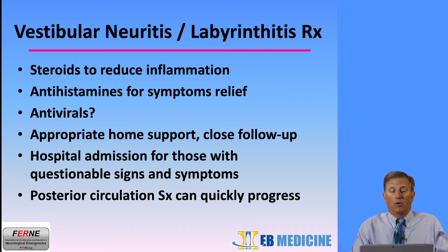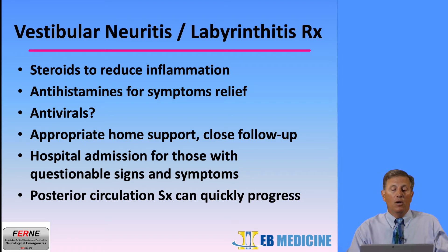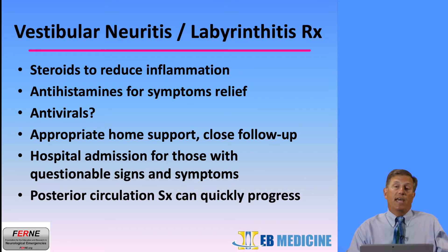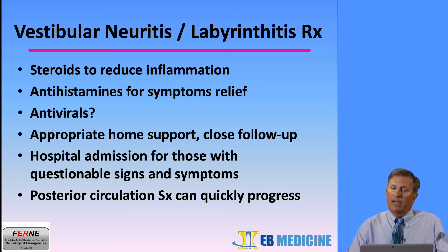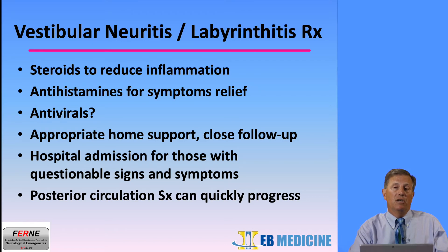What's the treatment of vestibular neuritis and or labyrinthitis? Steroids to reduce inflammation. Antihistamines such as meclizine for symptomatic relief. You might consider antivirals since it's most often a viral etiology. You need appropriate home support and close follow-up. Hospital admission is needed for those with questionable signs and symptoms to exclude posterior ischemic circulation problems. Posterior circulation symptoms can progress quickly, so observation for 24 to 48 hours with stroke team consultation is a good idea if there's any doubt.